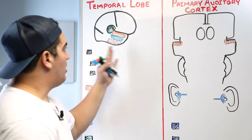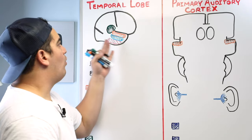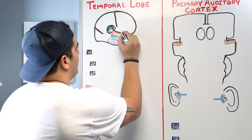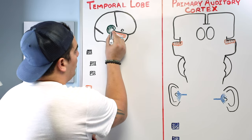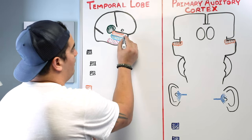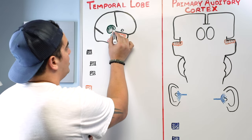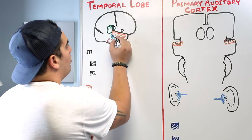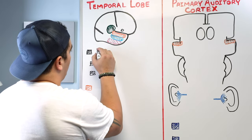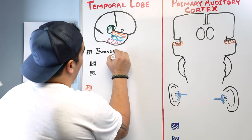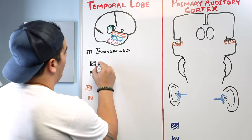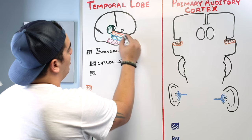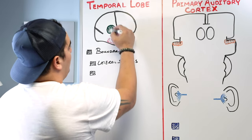Let's start talking about the temporal lobe, but in order to really understand it we have to establish some boundaries. The first boundary is called the lateral sulcus, or the sylvian fissure. This sulcus beautifully separates the temporal lobe from the frontal lobe and from the parietal lobe.